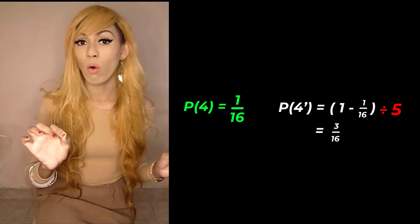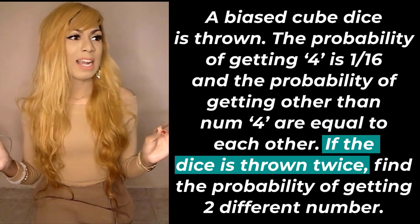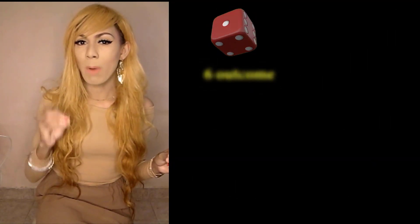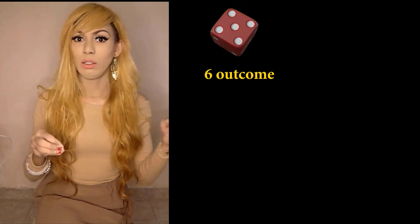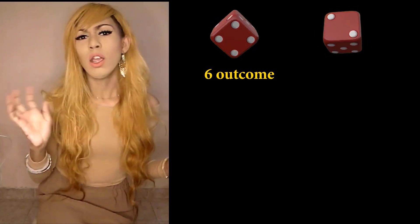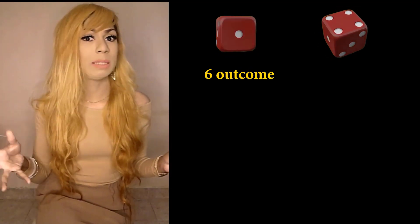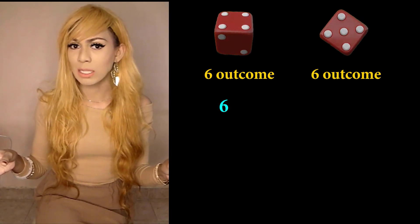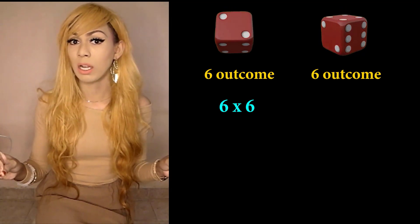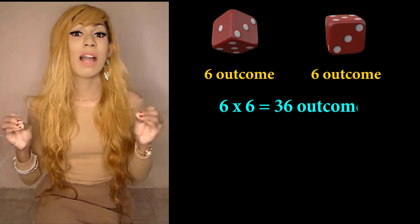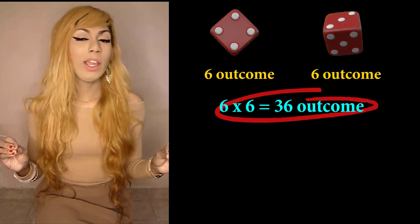If the dice is thrown twice, when we throw the dice for the first time we have six possible outcomes: one, two, three, four, five, six. The same applies when we throw it a second time — six possible outcomes again. So we have six times six, which gives us 36 possible outcomes in total.